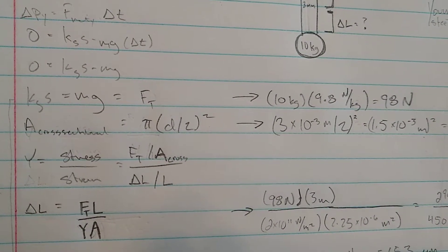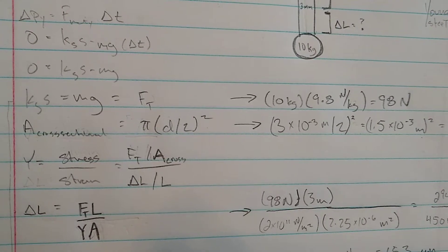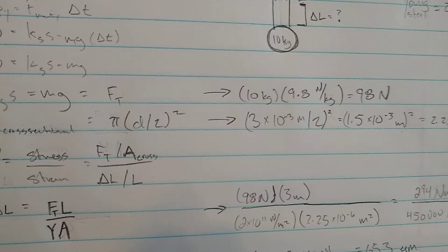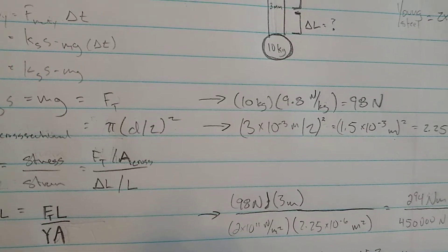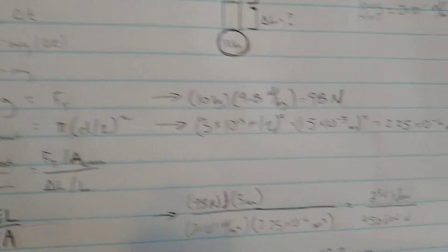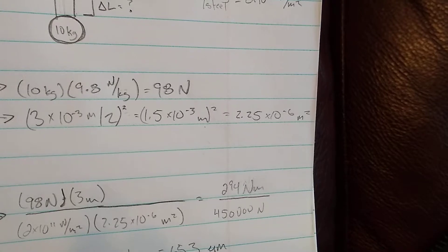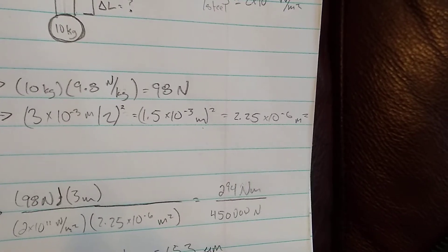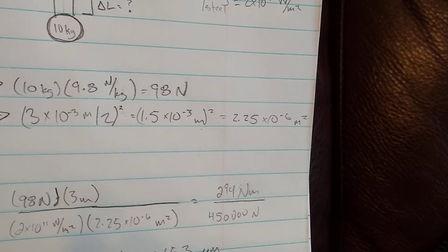And then we have to find the cross-sectional area of the wire, which is pi times our diameter divided by 2 squared. Ends up being a pretty small number, 2.25 times 10 to the negative 6 meters squared.